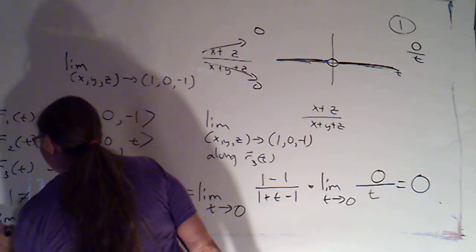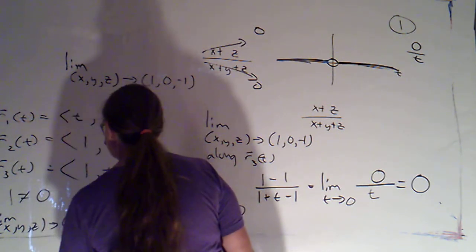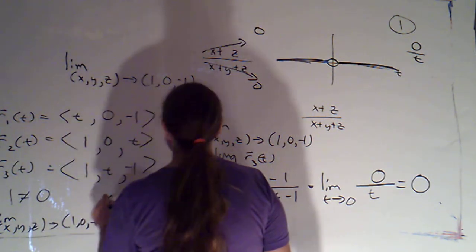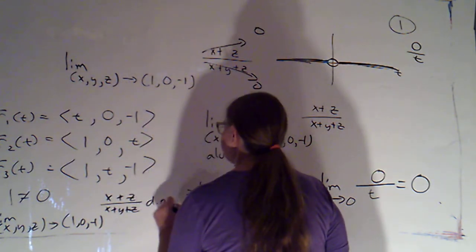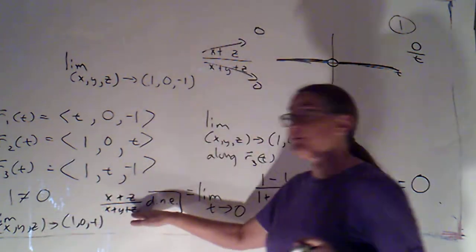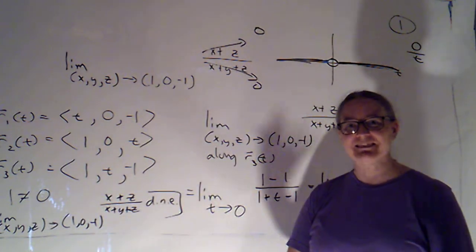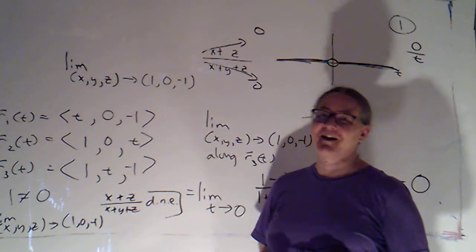So thus, the limit as (x, y, z) approaches (1, 0, -1) of (x + z)/(x + y + z) does not exist. It is important that I specify which limit doesn't exist because the path limits did exist. The overall limit is what does not exist.